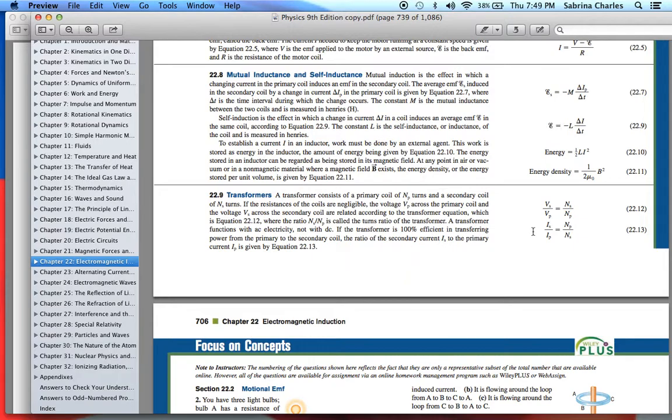The transformer equation is VS over VP equals NS over NP, where NS over NP is called the turns ratio of the transformer. A transformer functions with AC electricity, not with DC.